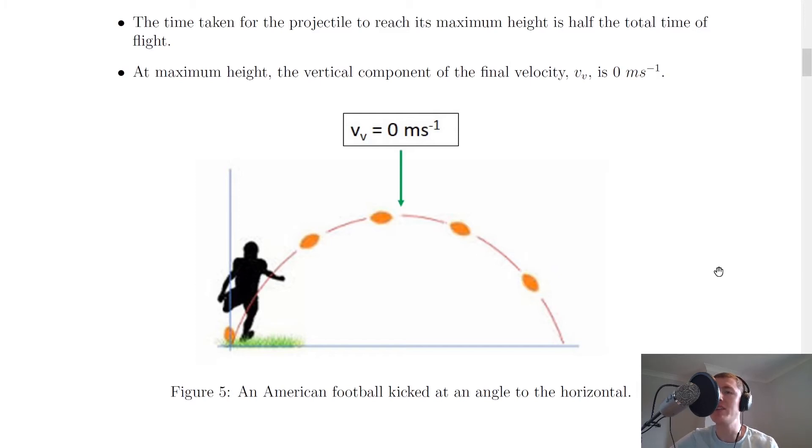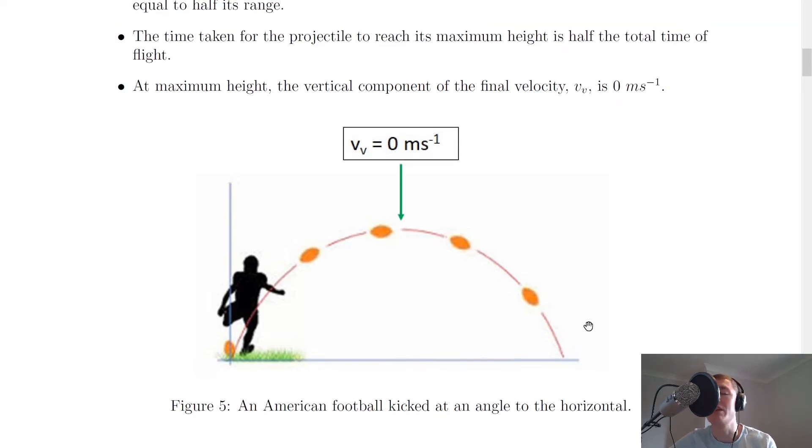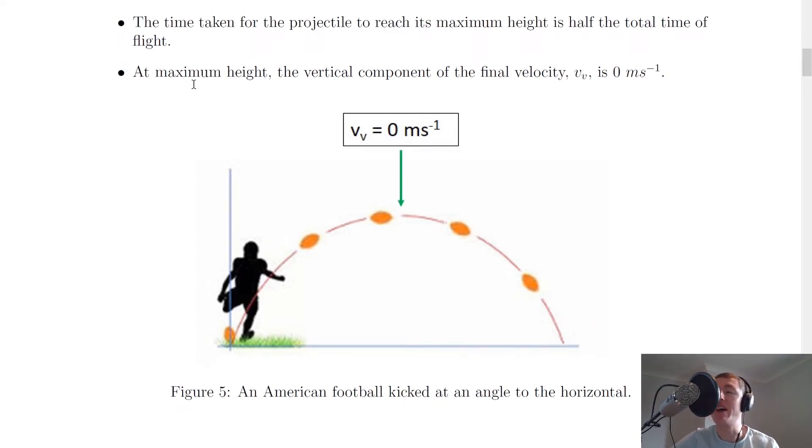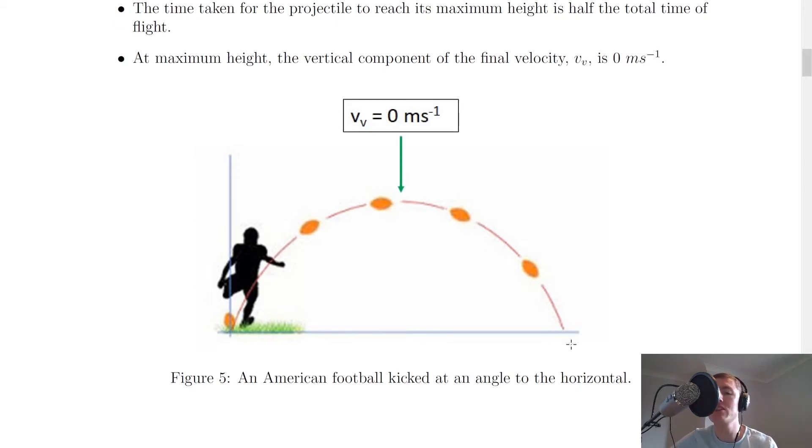So like we said in the theory video for the objects projected vertically upwards, we can use the idea that half of the full projectile motion will take half of the total time of flight. And lastly it says here a very important point that at maximum height the vertical component of the final velocity v subscript v is zero meters per second. So when the ball reaches halfway through its motion at this point it's going to reach zero meters per second and therefore when we're doing questions involving full projectile motion where an object is launched at an angle, then we can use this idea that the final vertical velocity is always going to be zero meters per second halfway along its motion.